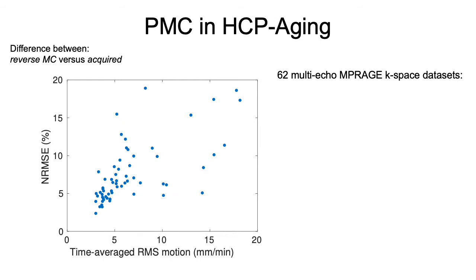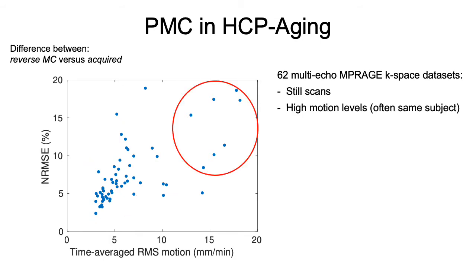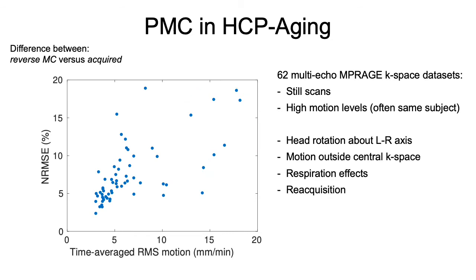This is a summary of the 62 HCP aging scans. The x-axis shows increasing levels of motion during the scan, and the y-axis shows increasing difference between the reverse motion corrected and acquired images. There were mostly scans without much motion, but also a few with high levels of motion, often from the same subject repeating the scan. We'll look at cases involving head rotation, motion outside the center of k-space, effects related to respiration, and the benefits of reacquisition.